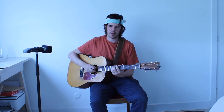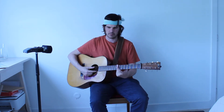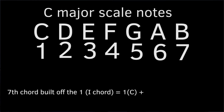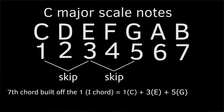How do you construct a 7th chord? Let's take the key of C major — seven notes: C, D, E, F, G, A, B, back to C. If I want to construct a 7th chord off the 1st degree of the scale, off the C — skip a note to the 3rd, stack it up, skip a note to the 5th, skip a note to the major 7th. I've got my C major 7th there.